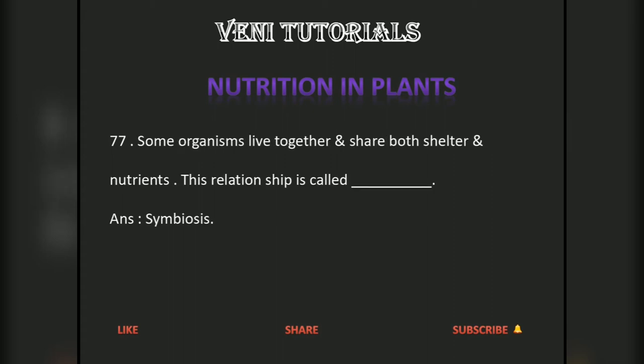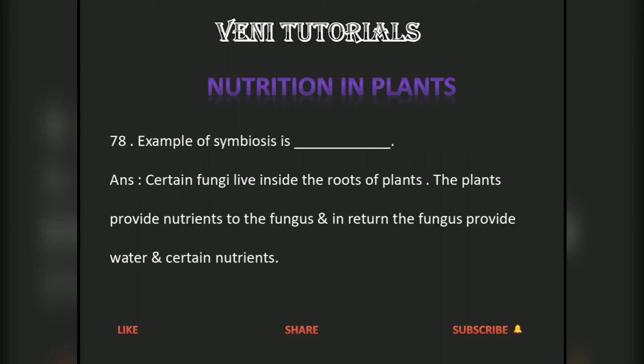Some organisms live together and share both shelter and nutrients. This relationship is called symbiosis. An example of symbiosis is certain fungi living inside the roots of plants — the plants provide nutrients to the fungus, and in return the fungus provides water and certain nutrients.